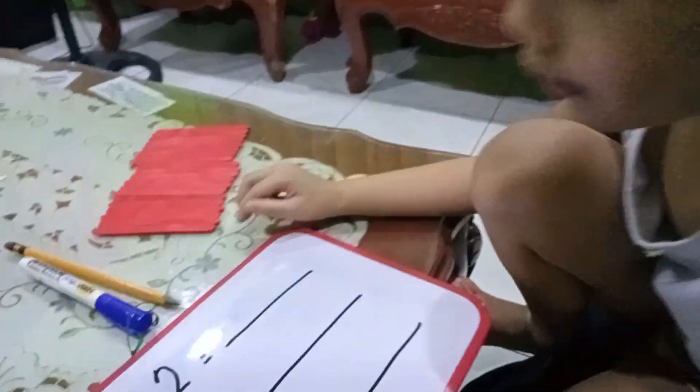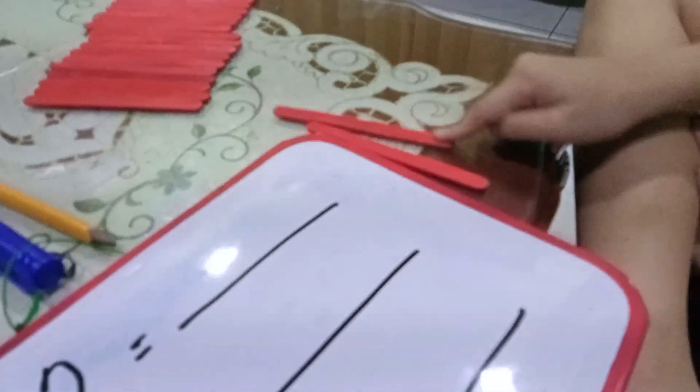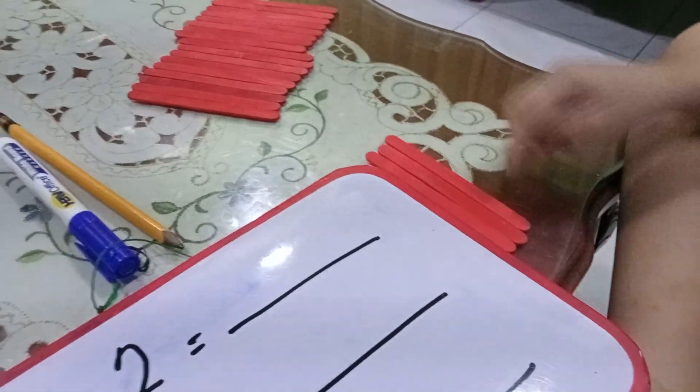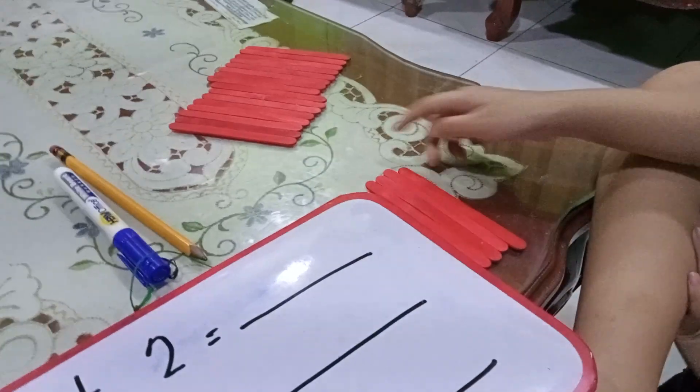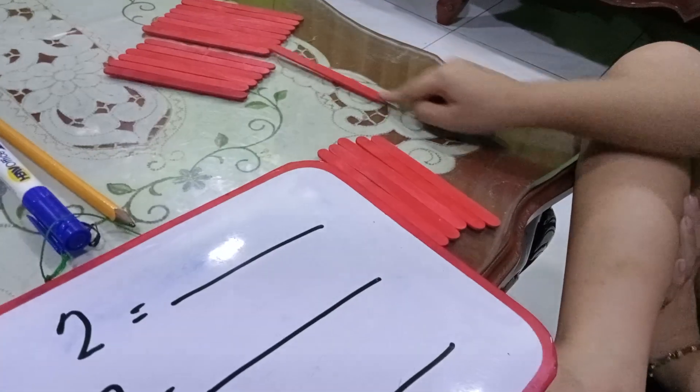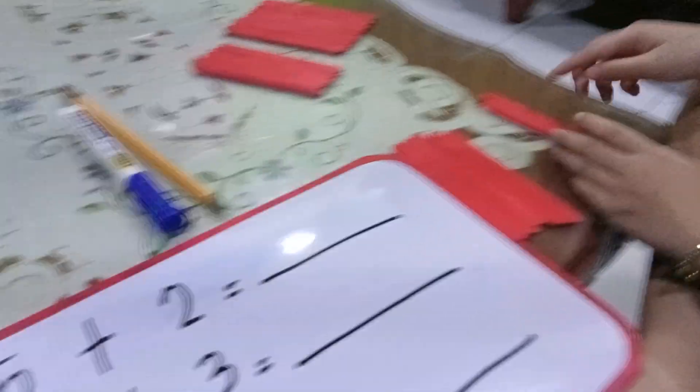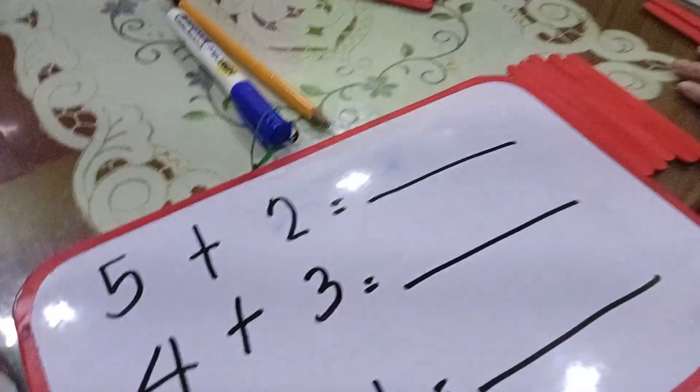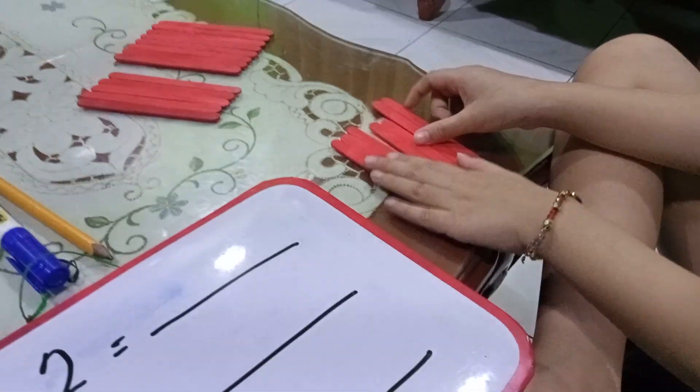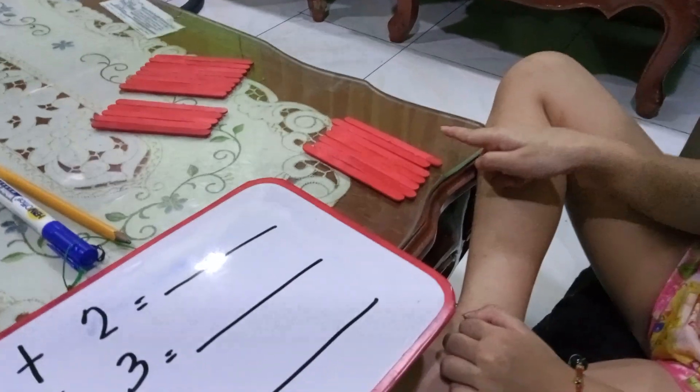Hi Blake, are you ready? Okay, let's start now. 5 + 2. Okay, next plus two: one, two. Okay, now you need to join it together. 5 + 2, count all the popsicle sticks.